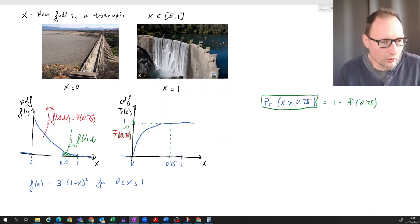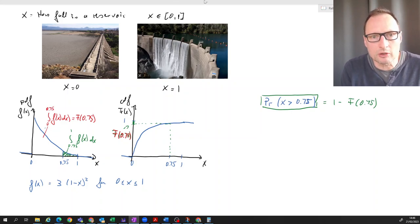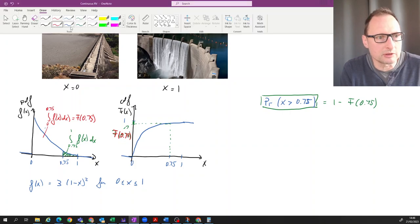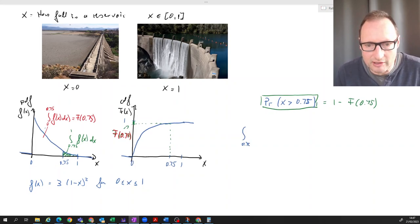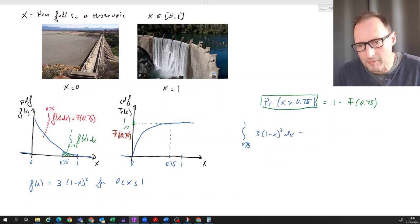And what we want is one minus that value, or that green area. So let's get out our integral calculus and let's write this down. So let's do that here: the integral between 0.75 and 1 of f(x), which is 3(1-x)² dx.